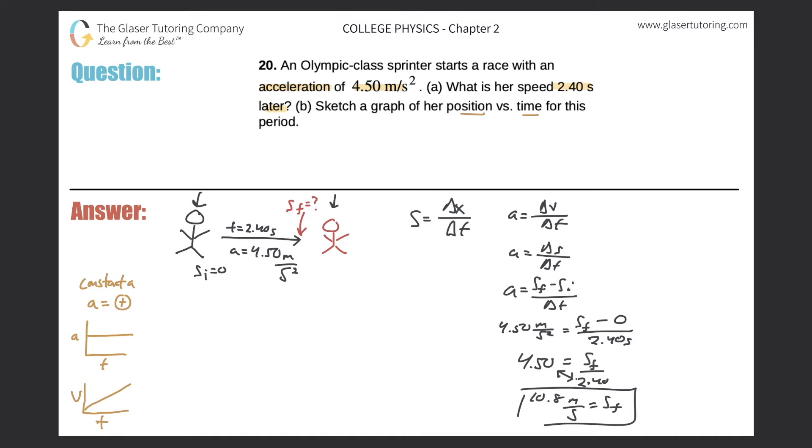And now last but not least, we can now draw the position graph. The position graph would be essentially the distance versus time or displacement versus time. What we're going to see here is an exponential type of graph. So these are the three graphs you must be familiar with when you're considering a constant positive acceleration.